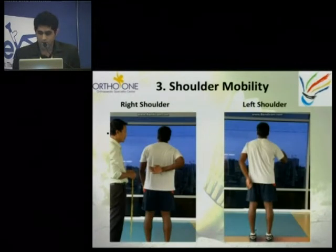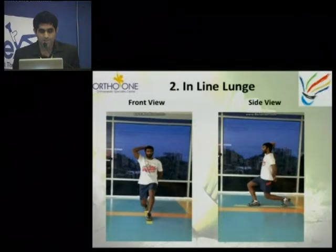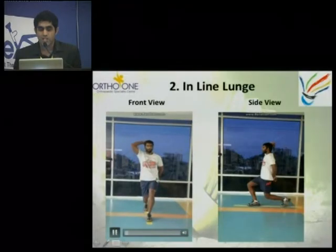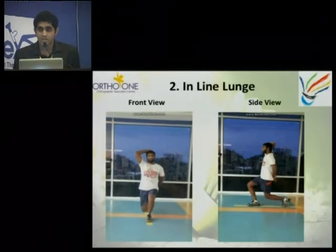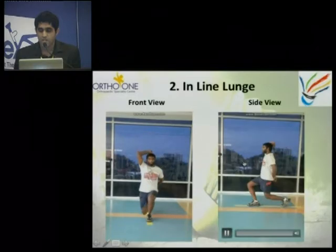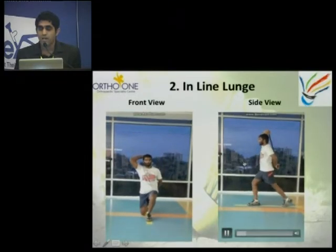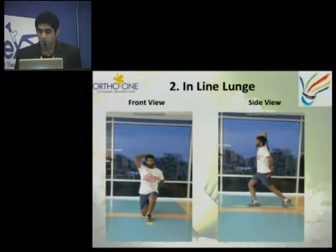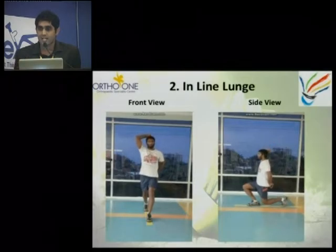The inline lunge — as you can see in the front view, the athlete does pretty well. His balance is good and everything looks good. But if you see the side view, he tends to move a little forward and could not grip the stick properly. All these areas need to be addressed and we have to prescribe a lot of corrective exercises.